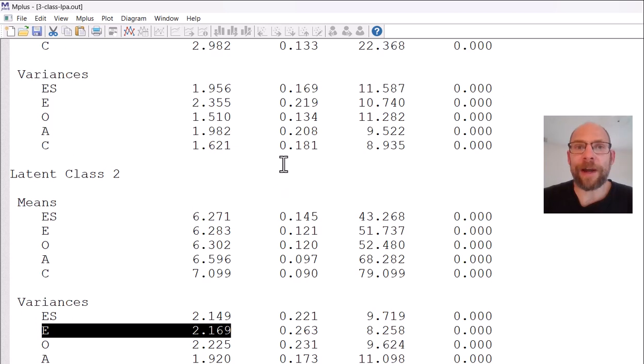This is how you can override the M plus defaults by including these class specific statements. It would be the same thing if you ran a latent class analysis and you wanted to free something up or have a class specific constraint. But it's especially important to know for latent profile analysis because you may not like the M plus defaults there. In particular, you may not like the default of having equal variances across those classes because that may not be plausible. And reviewers may ask you and say, hey, why did you go with those defaults? Did you also test a model where the variances were freely estimated? So it's useful to know.